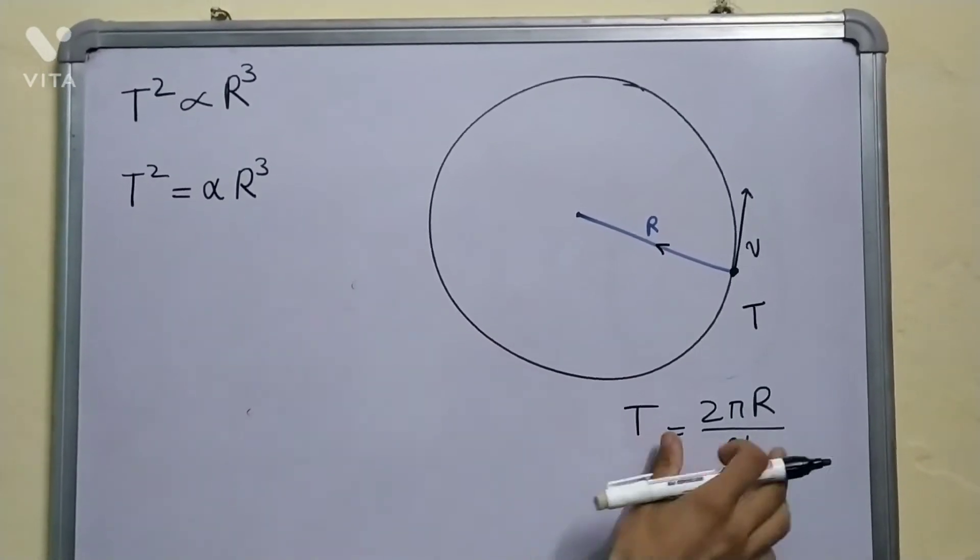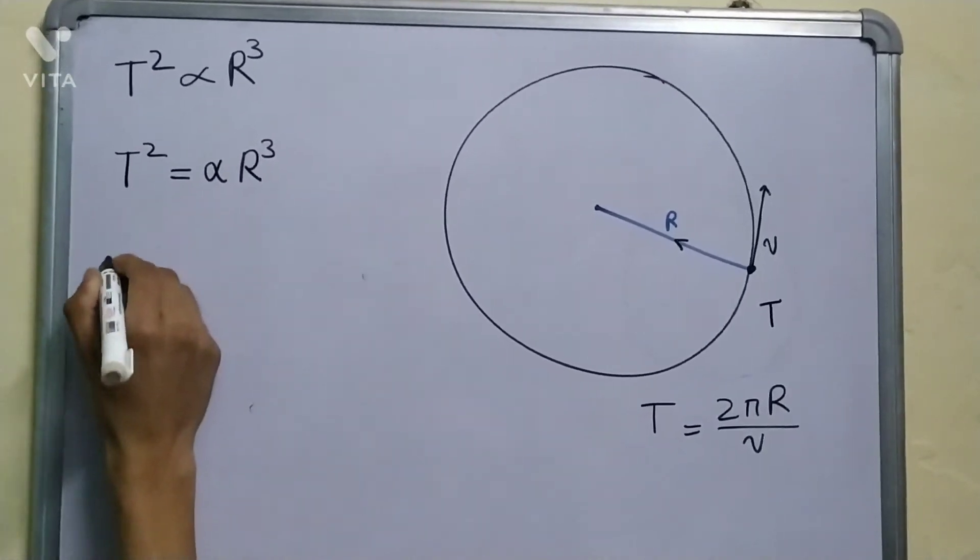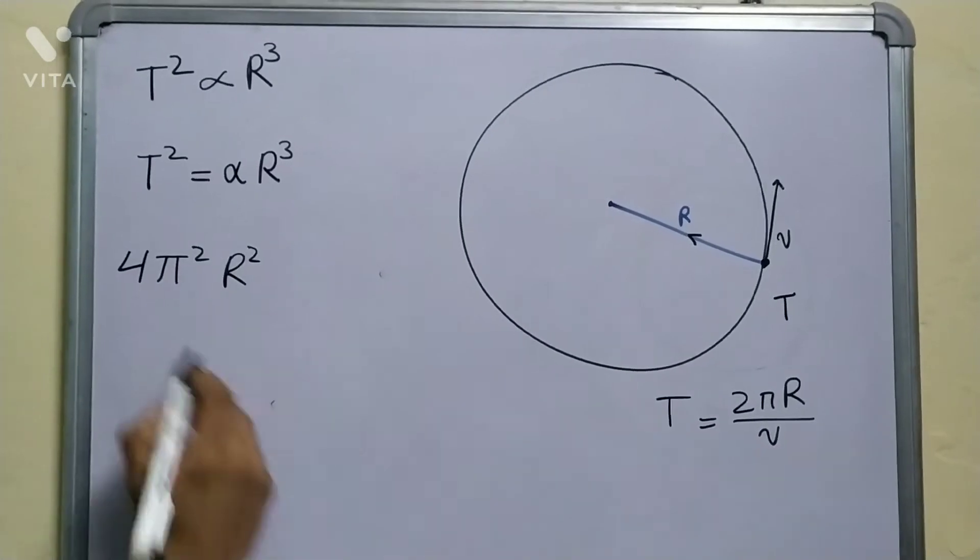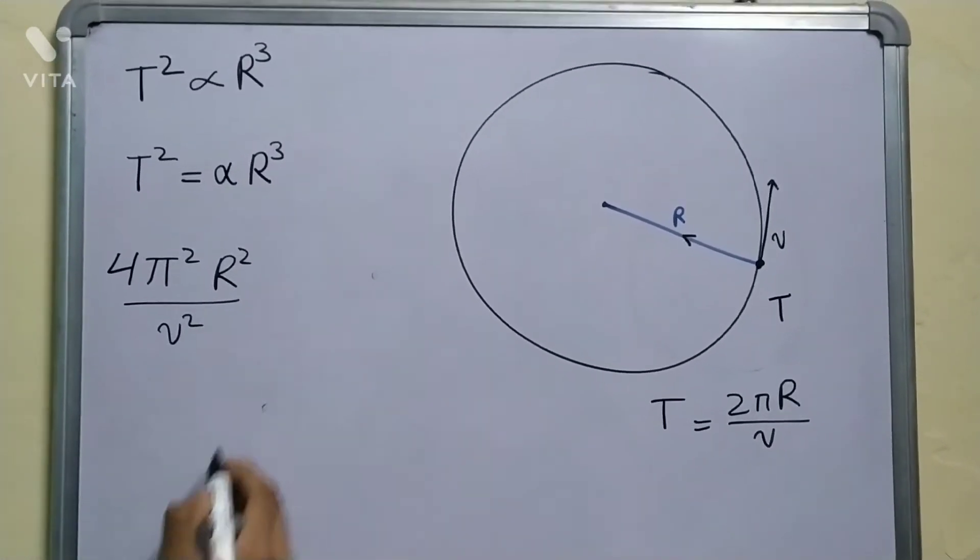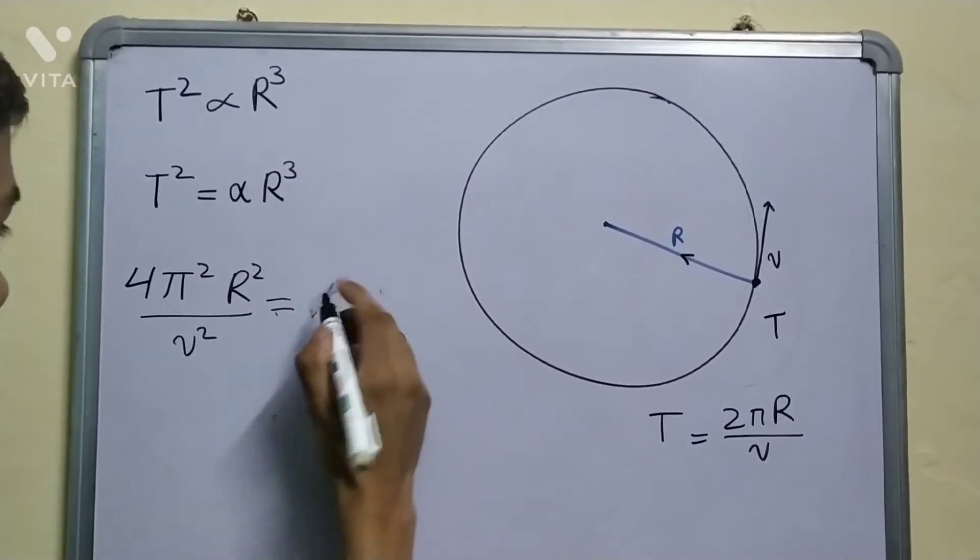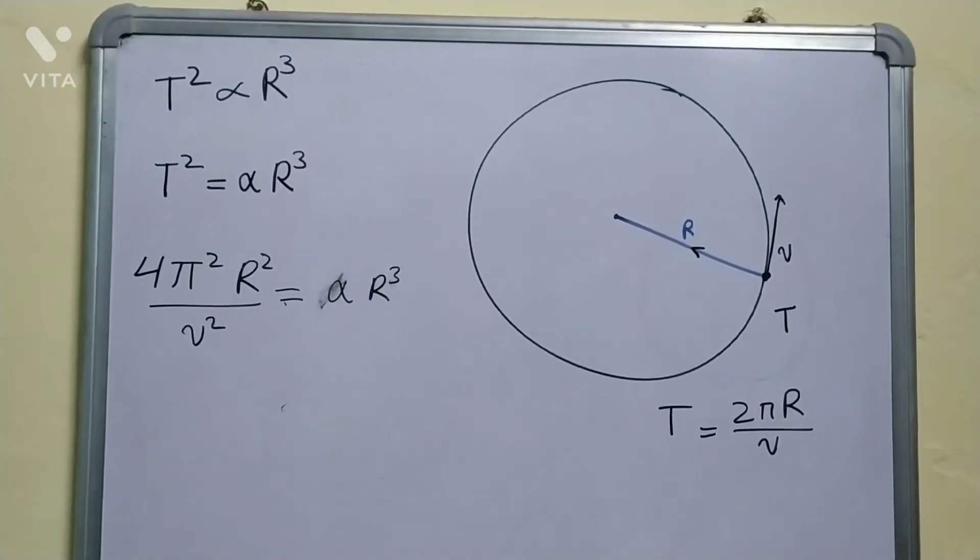Now we just substitute this relation into this equation, so we find out 4π² r² (just squaring this term) upon v² is equal to some constant alpha times r³.